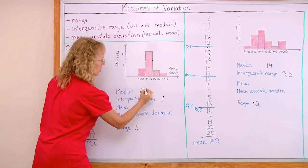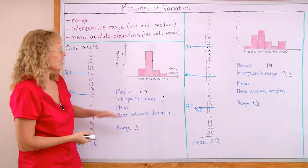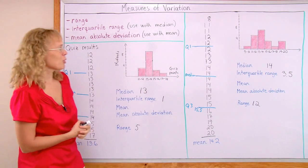Whereas here the median was 13 and the interquartile range was 1. So number-wise it is agreeing with what we can see in the graph that that is more spread. That data is more spread.